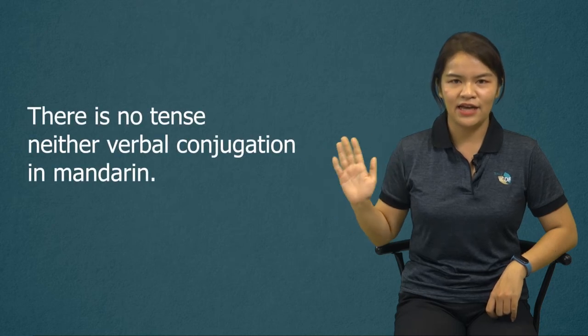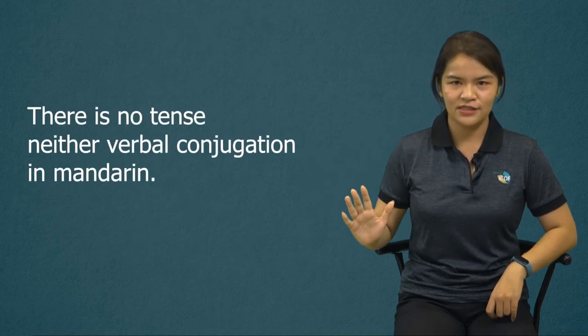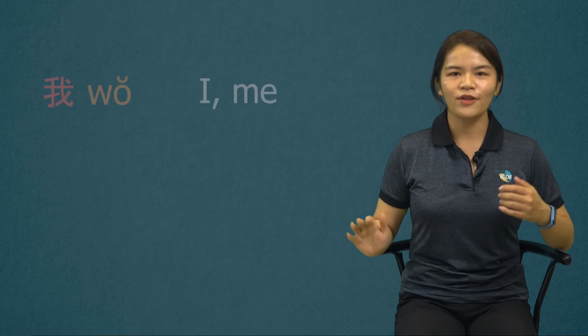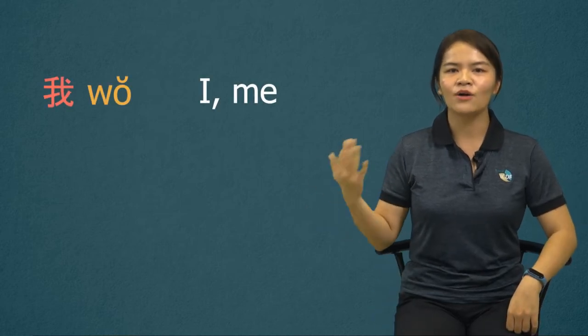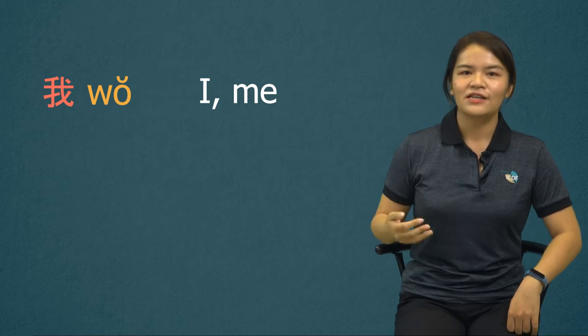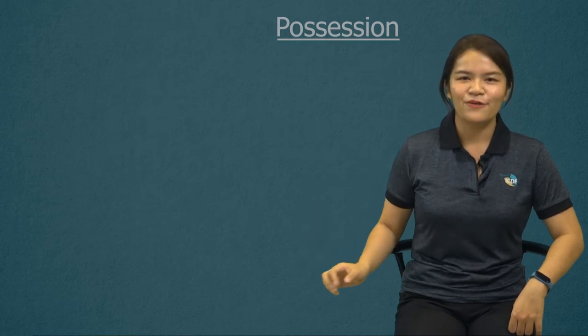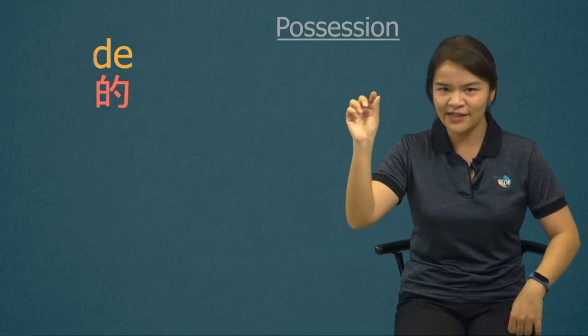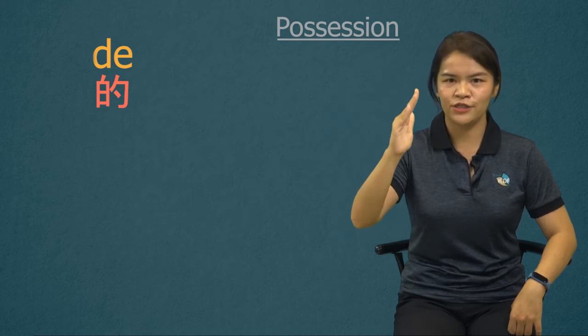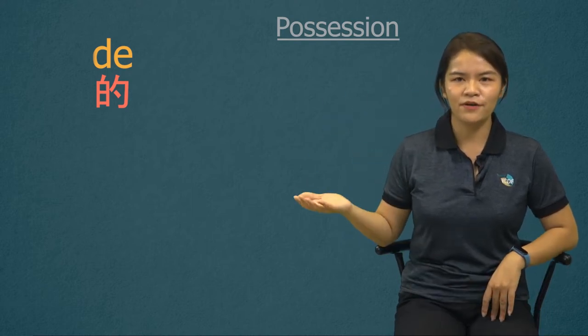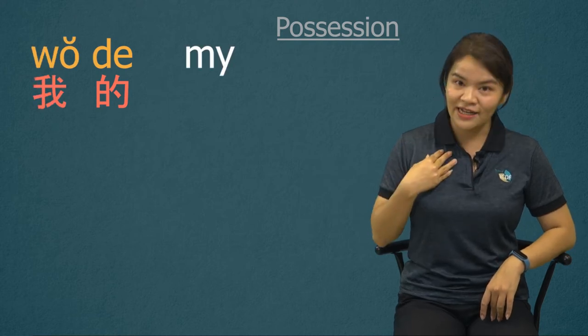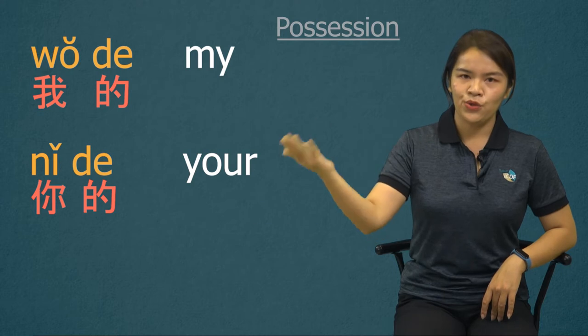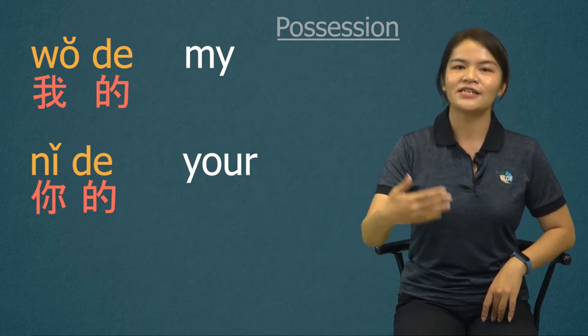Last episode, we talked about there is no tense, neither verbal conjugation in Mandarin. Good news — there is also no cases. So both 'I' and 'me' are 我. For possession, we just add the particle 的 after the pronoun. Mine is 我的, your is 你的, and his is 他的.